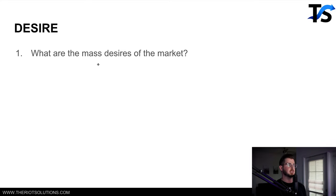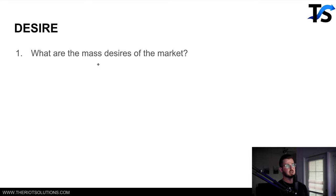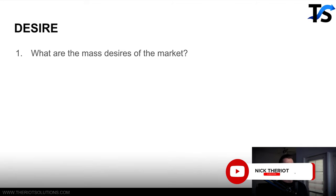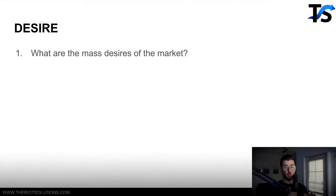The mass desire of your market is what ultimately tells you what angle of approach you need to take for your headline or hook. Desire is the reason why people purchase a product — maybe it's a pair of jeans because they want to look good for a date, a bodybuilder buying chicken breast for the protein, or a mom buying chicken breast to cook a good meal for family. You figure this out by doing market research: watching YouTube videos, looking at Amazon reviews, looking at competitors, and general research on your target audience.